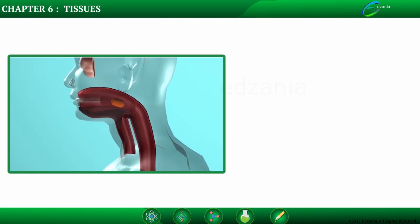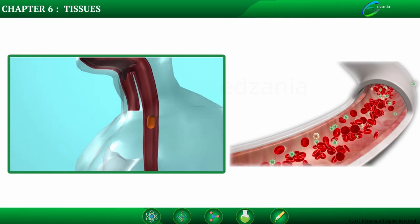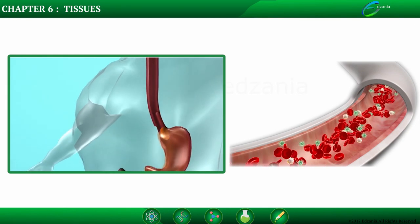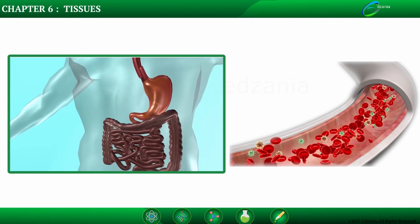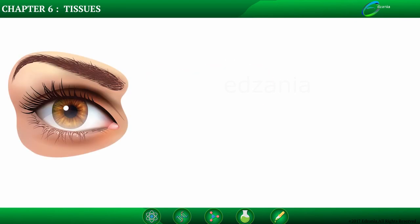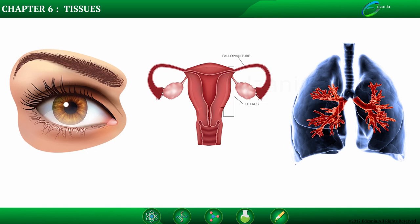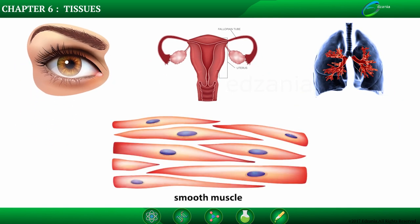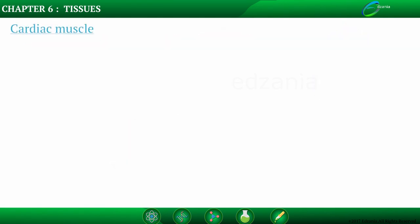Smooth muscles control involuntary movements such as movement of food in the alimentary canal or contraction and relaxation of blood vessels. They are also found in the eye, uterus, and bronchi of lungs. The cells are long with pointed ends — spindle-shaped — and uninucleate (single nucleus). They are also called unstriated or non-striated muscles, as they do not show light and dark bands under a microscope.